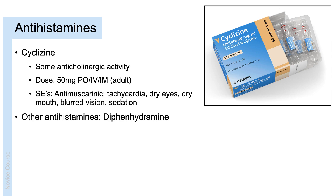Antihistamines exert their antiemetic effect through blocking the action of histamine at the chemoreceptor trigger zone. The most commonly used medication in this class is cyclizine. Though this is the main way that cyclizine works, it also has some anticholinergic activity, meaning that it blocks the action of acetylcholine at the chemoreceptor trigger zone, thus adding to its antiemetic effect. It is given in a dose of 50 milligrams for an adult — PO, IV, or IM — and it does have some side effects including anti-muscarinic side effects: tachycardia, dry eyes, dry mouth, blurred vision, and it can produce some degree of sedation, particularly in the elderly. Diphenhydramine is another antihistamine that can be used in the treatment of post-operative nausea and vomiting, but is not as commonly used as cyclizine.